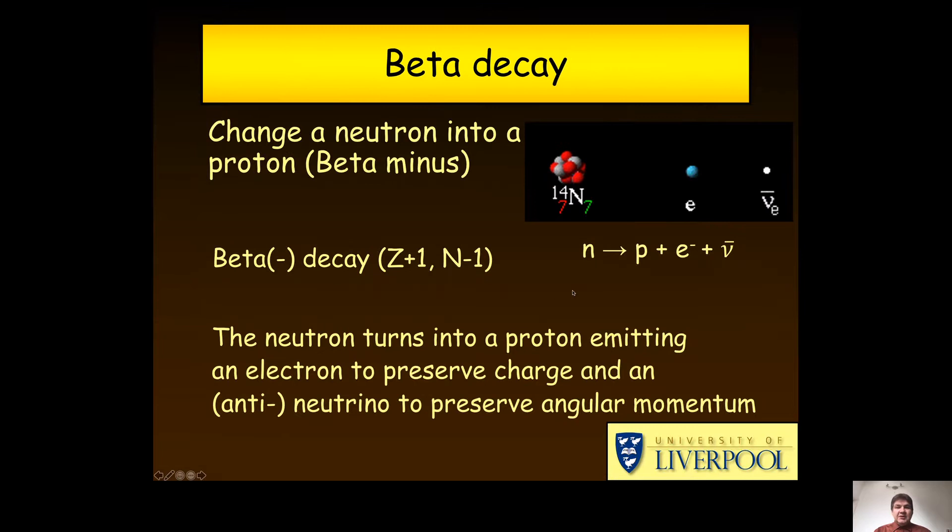In beta decay, one neutron spontaneously changes into a proton. In order to preserve the total charge in the universe, this cannot just happen by itself. If you have no electric charge before the decay, and remember the neutron was electrically neutral, then we also cannot have a net charge afterwards.